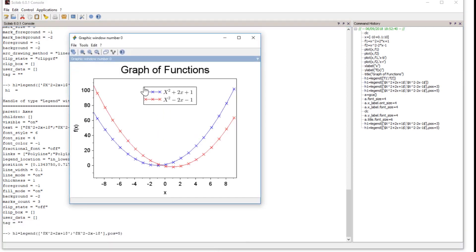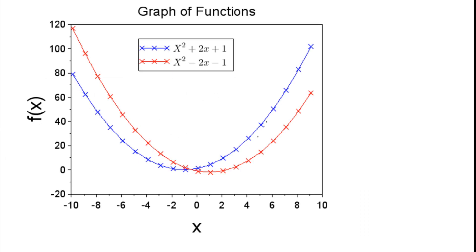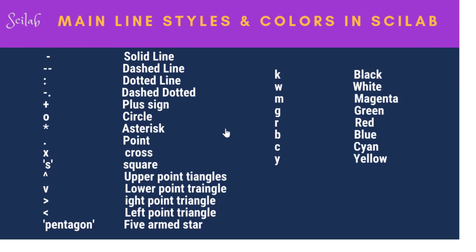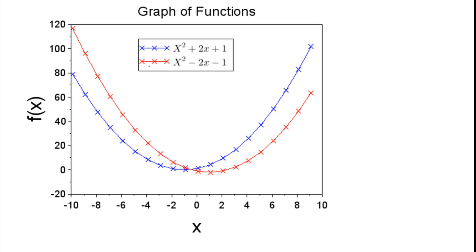After placing the legend, the graph looks exactly as intended. These are the line styles and colors available in Scilab: cross, solid line (dash), dotted line (colon), and others. In the next plotting lecture, we will see how to modify x-ticks - the distances and values shown on the axes - and we will use trigonometric functions to demonstrate that.